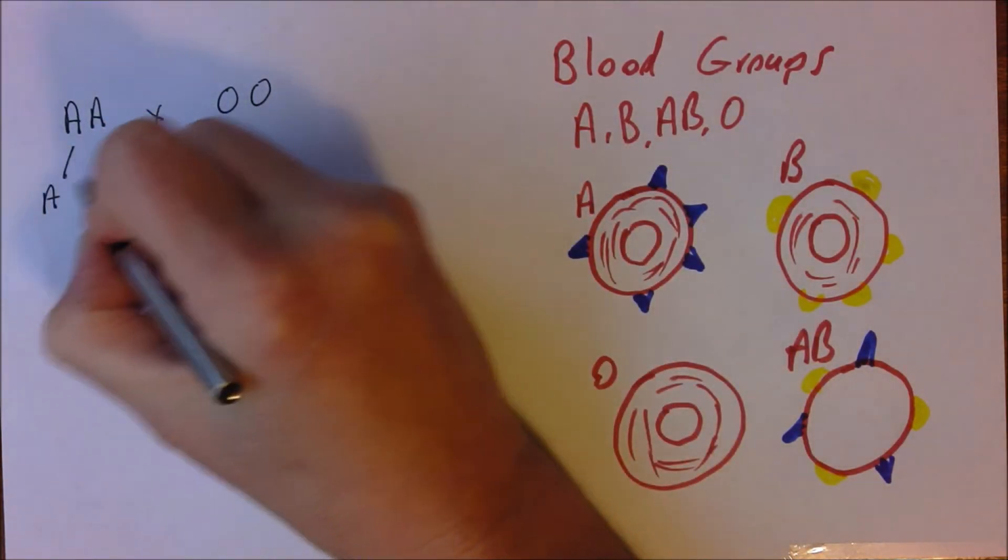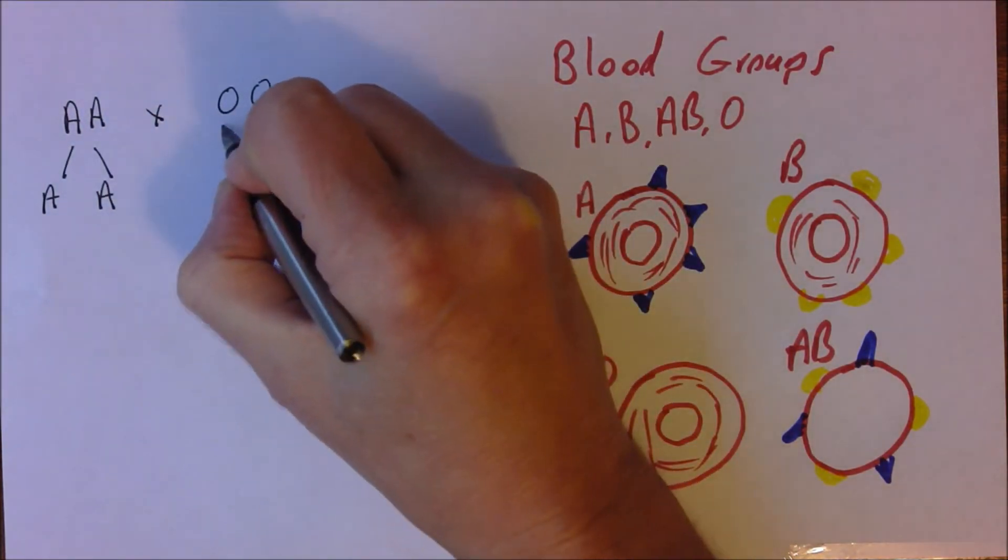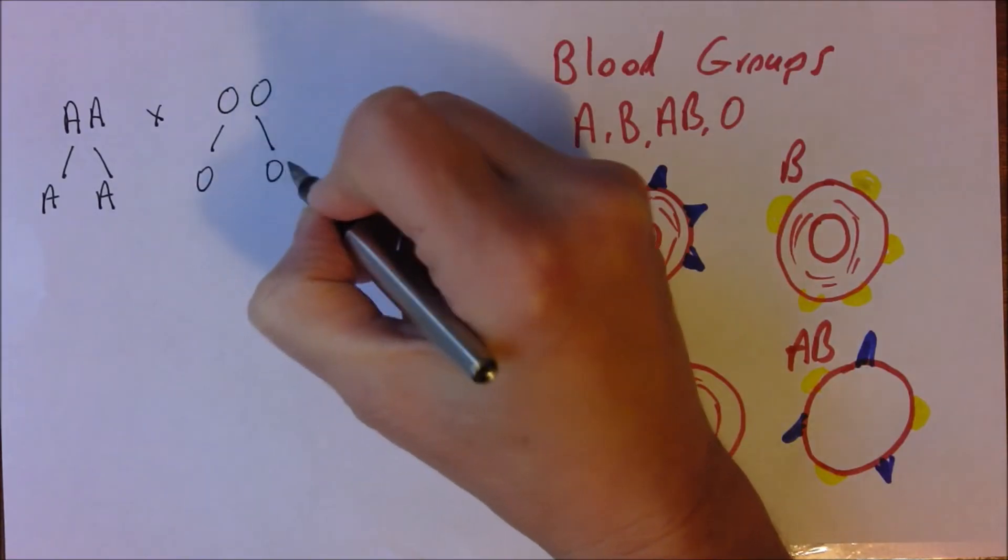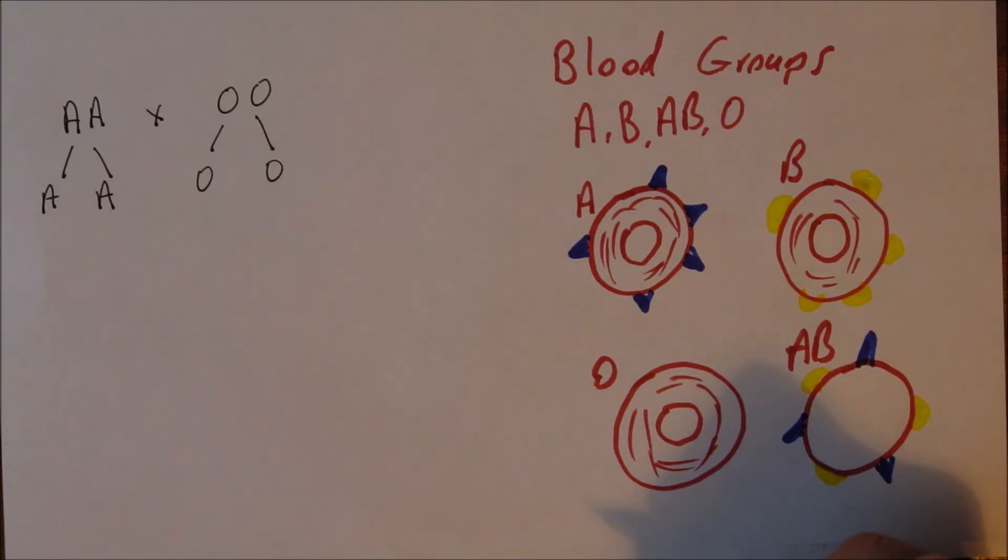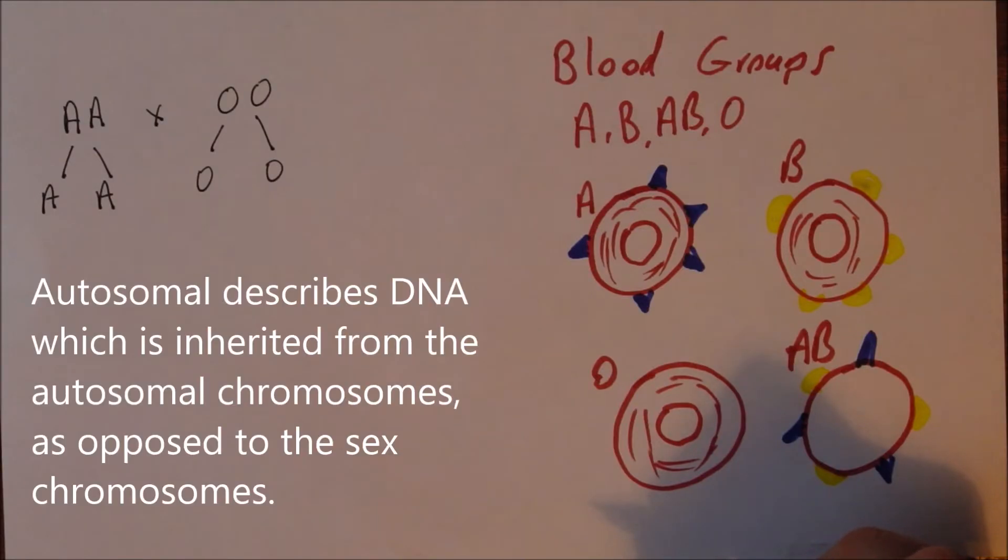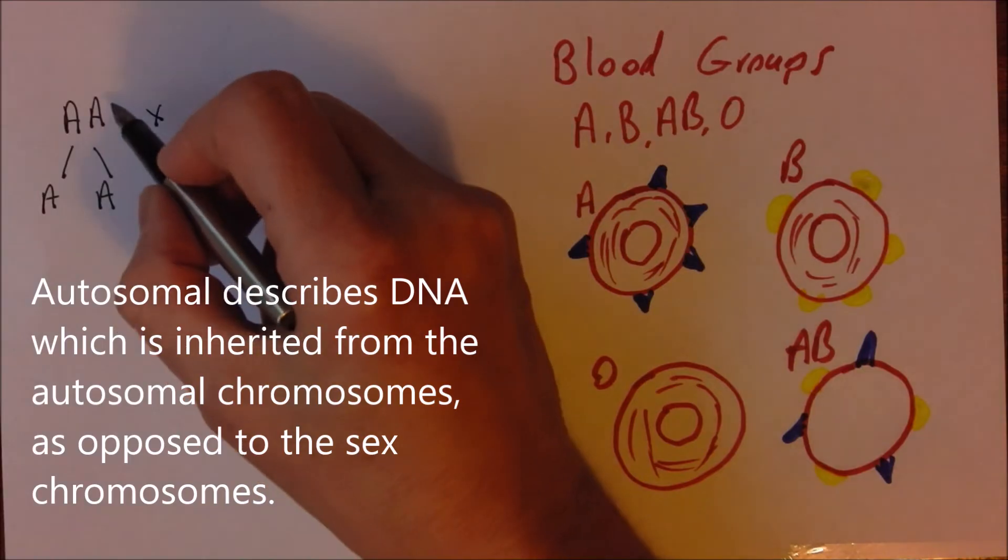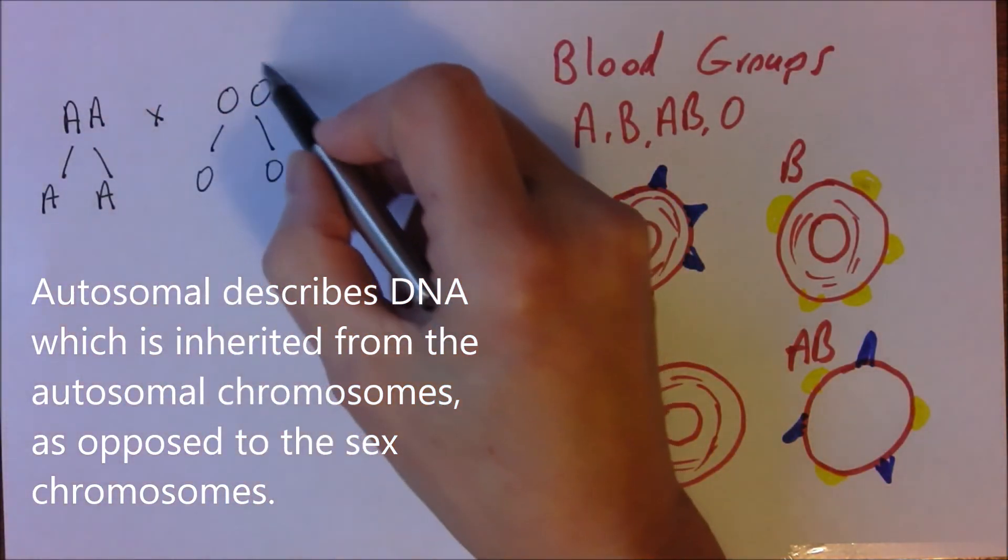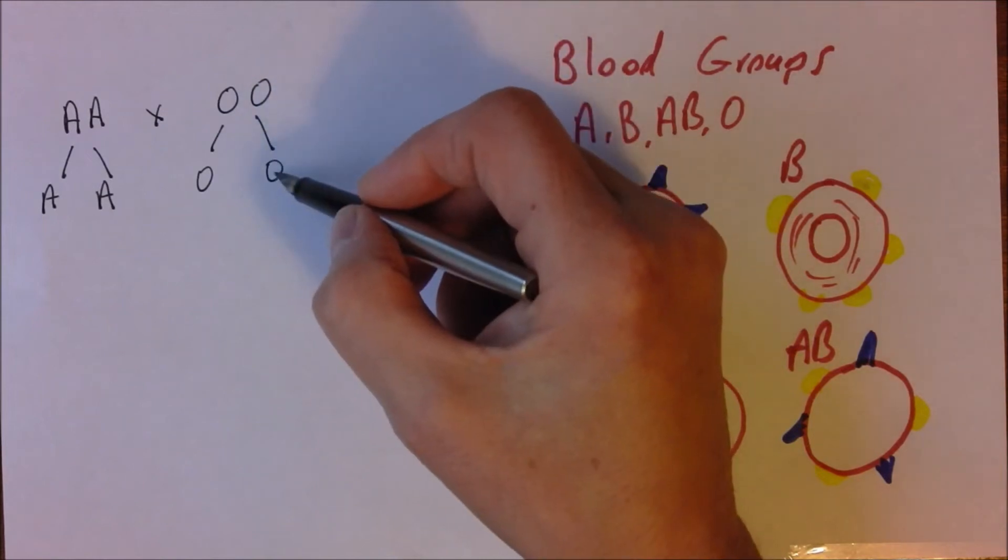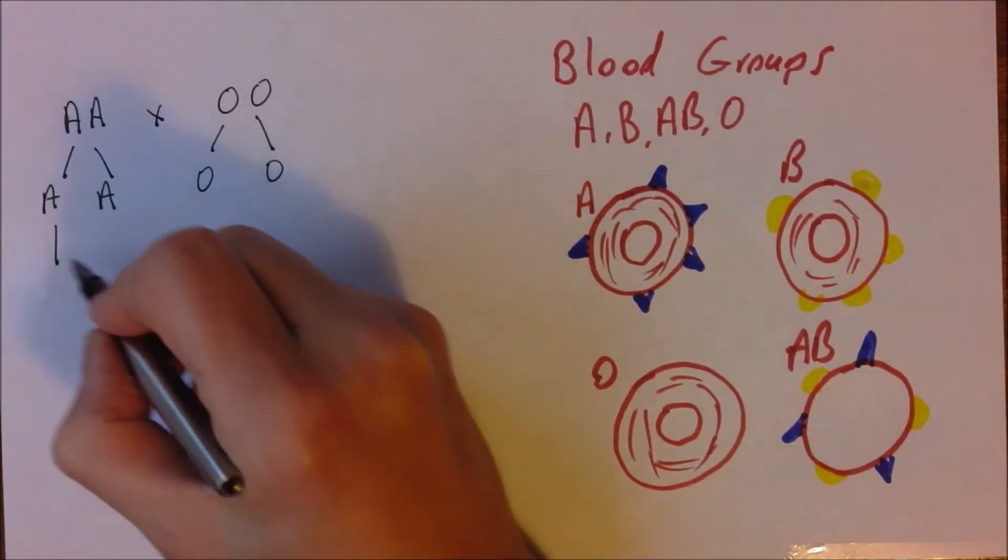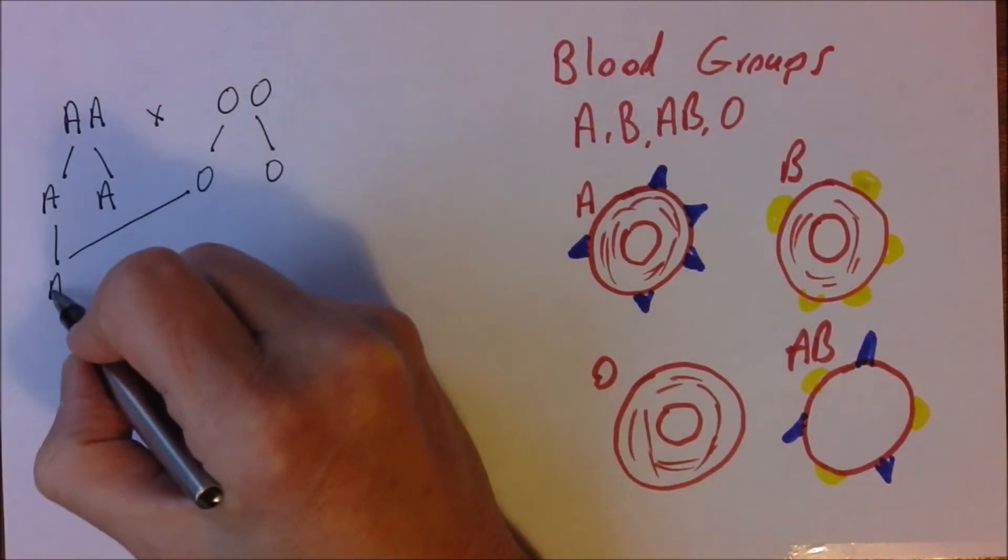So they'll make gametes and we notice that this is completely autosomal. It's a normal autosomal form of inheritance. So here we have two genotypically homozygous parents. The diploid cells produce the haploid gametes and that could combine with that and that will give us AO.